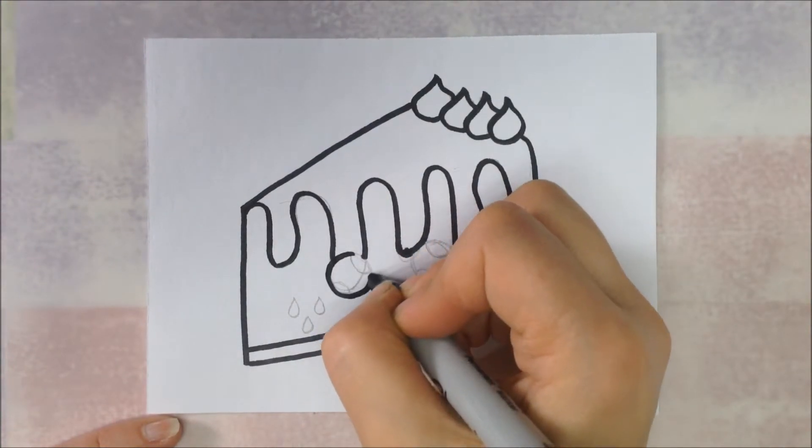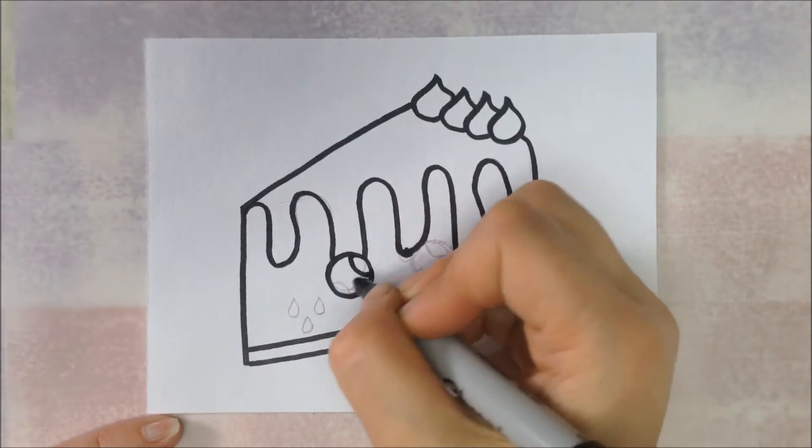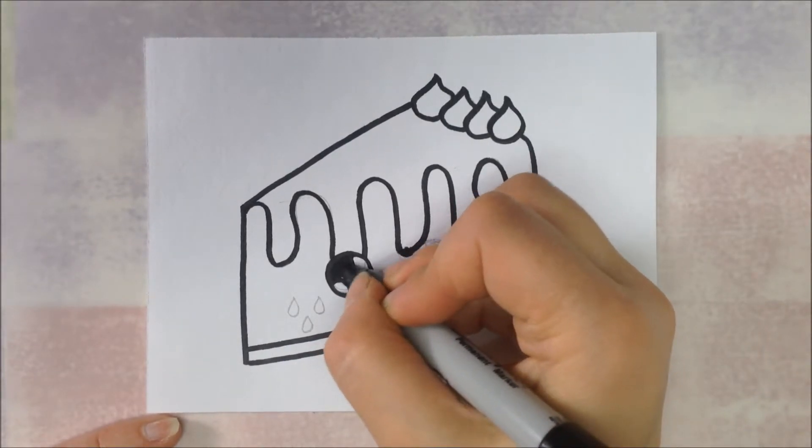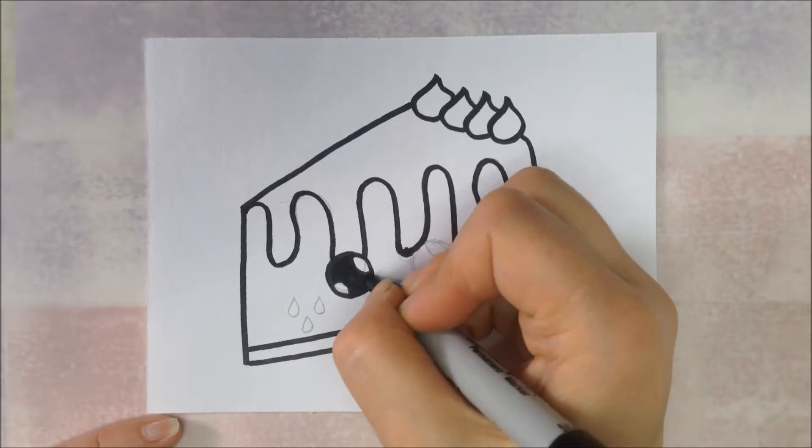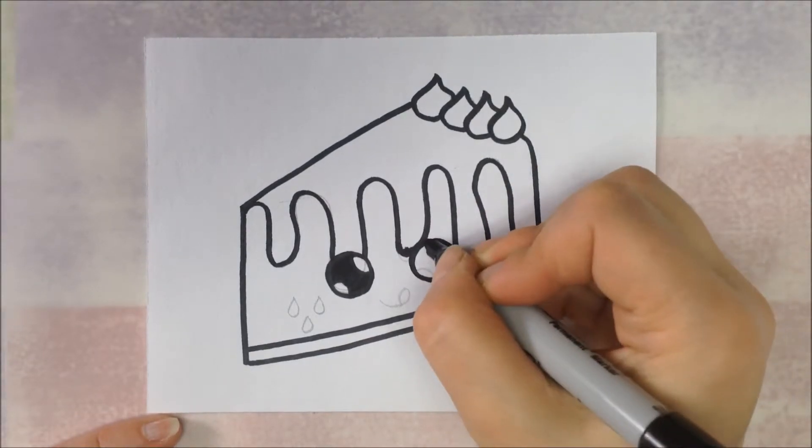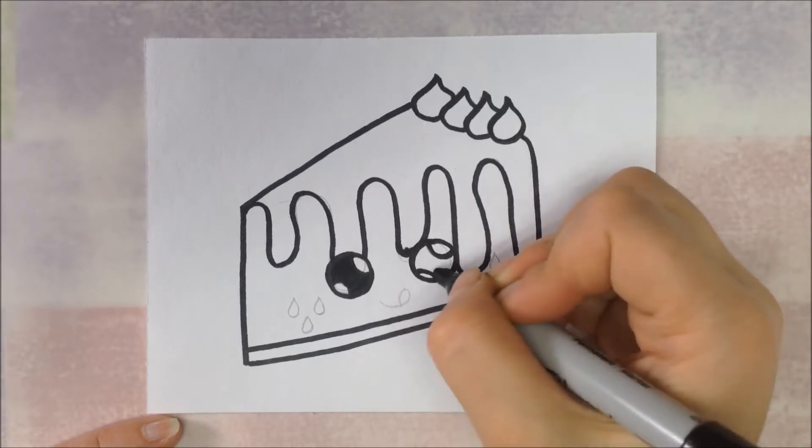And then outline the eyes and then just fill in the center part. There is a pencil line inside the white of this eye that I'm going to erase later from the dripping of the icing. So that will need to be erased.